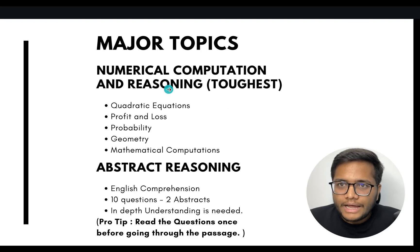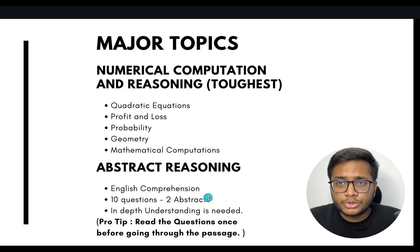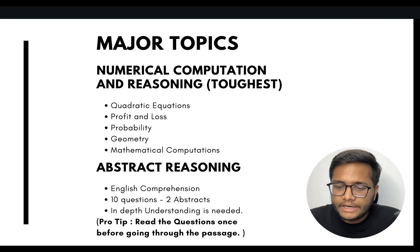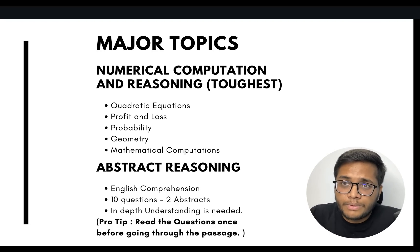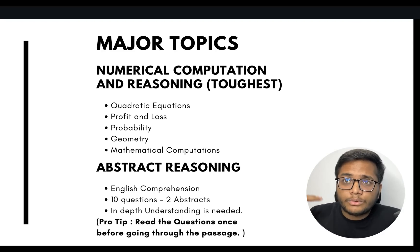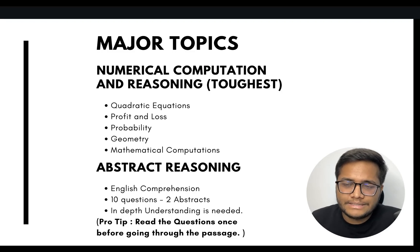The numerical section can be avoided at the beginning and attempted at the end if you have time. In the abstract reasoning section, you'll have English comprehension — 10 questions across two comprehensions. Read the questions first before reading the passage so you know which part to focus on, rather than re-reading the passage multiple times. The passages are not very difficult, so attempt them carefully to avoid silly mistakes.